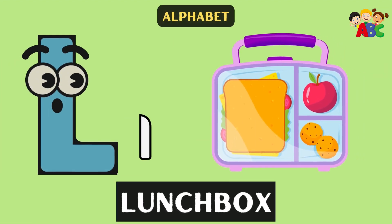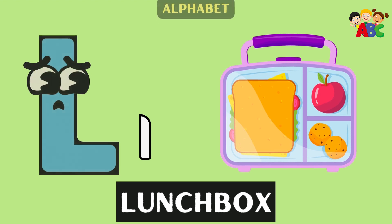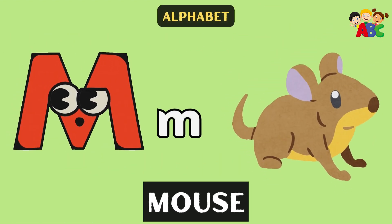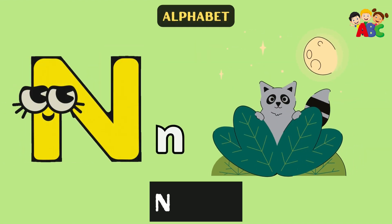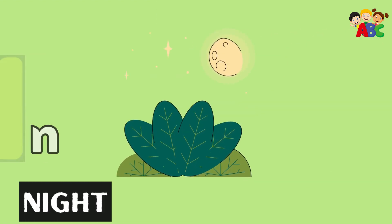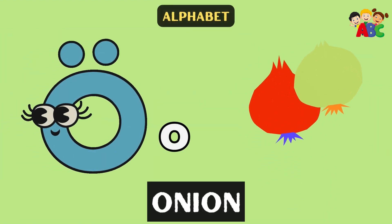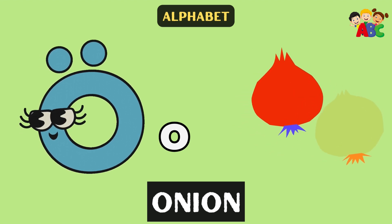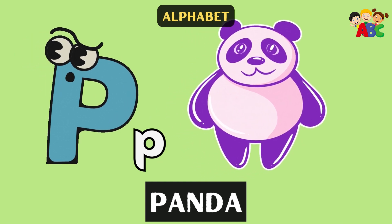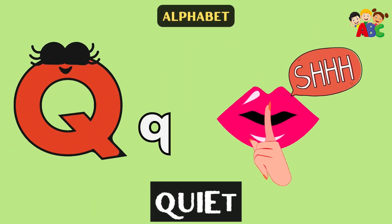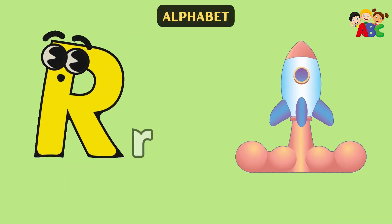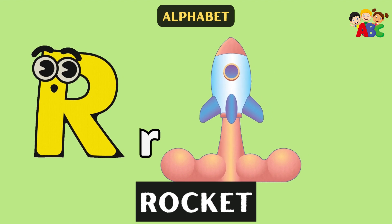L for Lunchbox. M for Mouse. N for Night. O for Onion. P for Panda. Q for Quiet. R for Rocket.